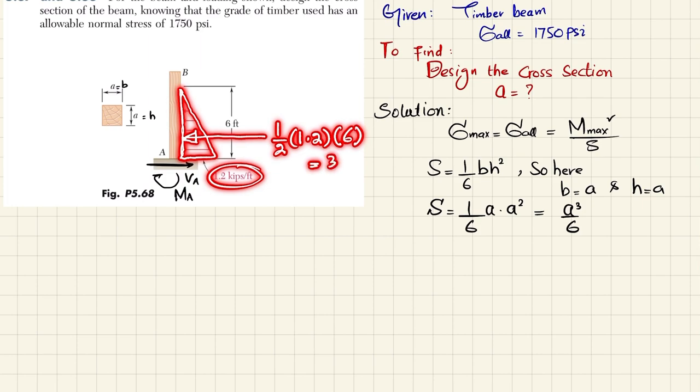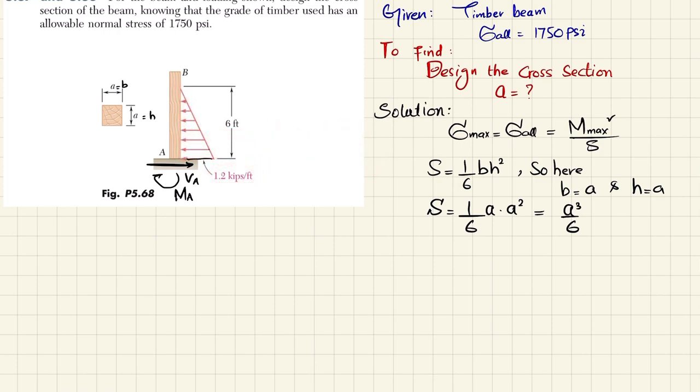equal to 3.6 kips. Now we will represent this. If you convert it into a point load, the magnitude will be equal to 1 over 2 into 6 into 1.2, and that will be equal to 3.6 kips. And where will